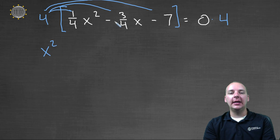Four times negative three-fourths, the fours would cancel, and you'd get negative three times x. And then four times negative seven would give us minus twenty-eight. And that's equal to zero times four on the right hand side, which is still zero.